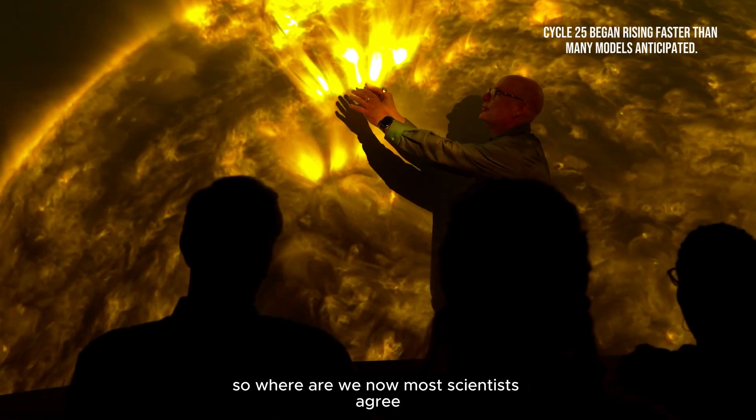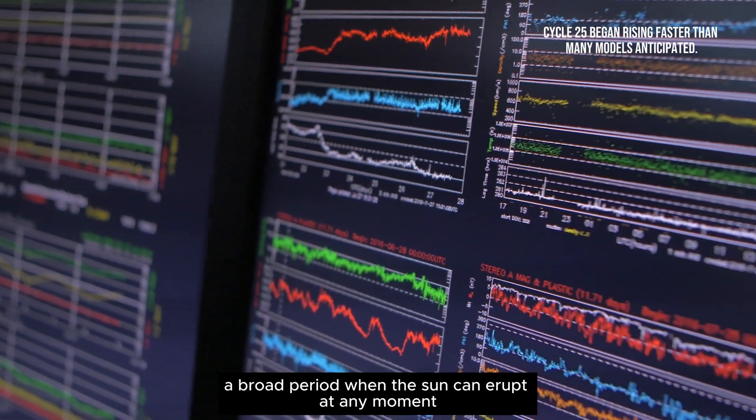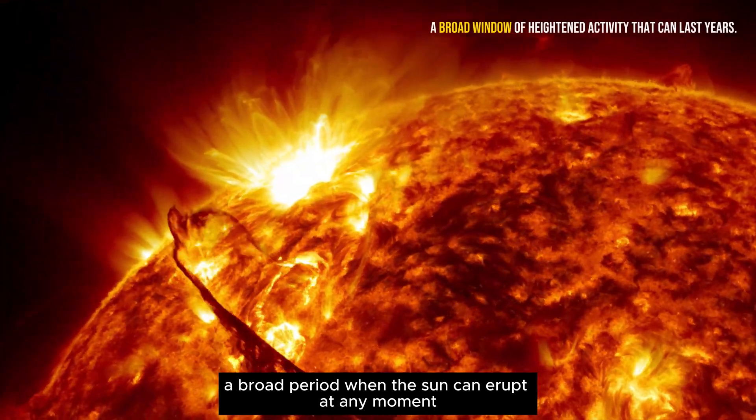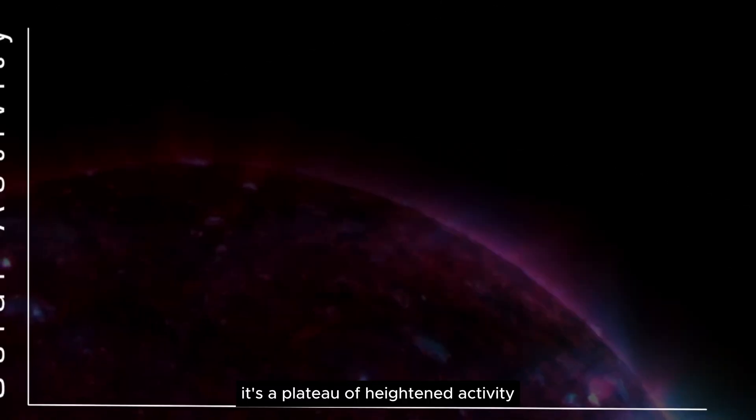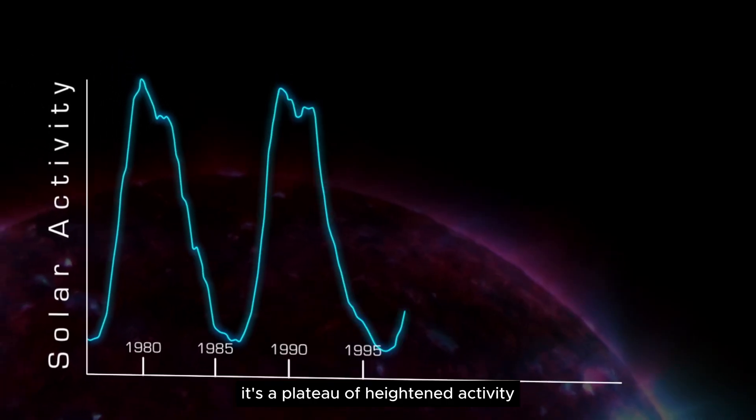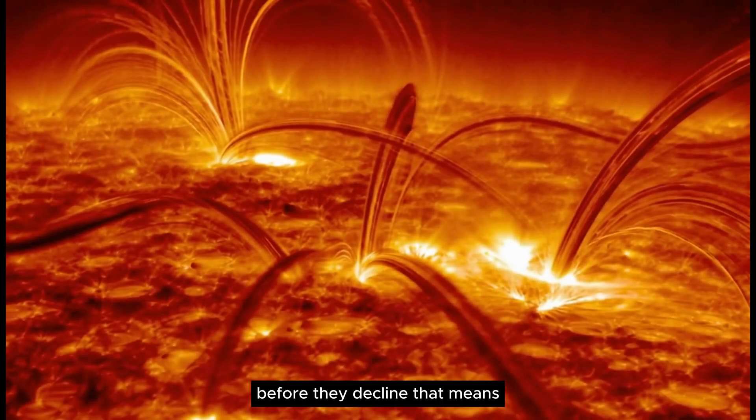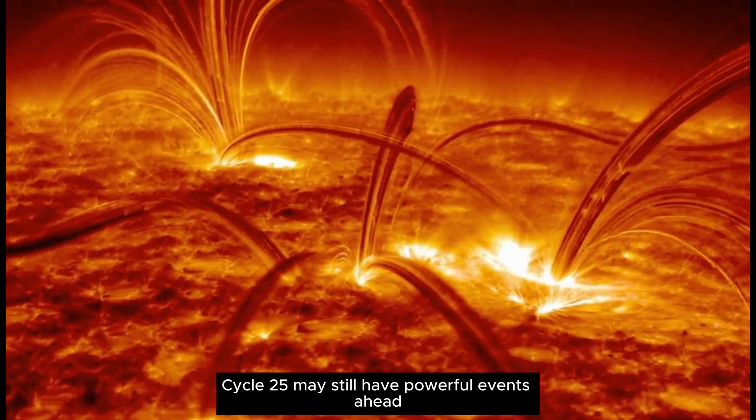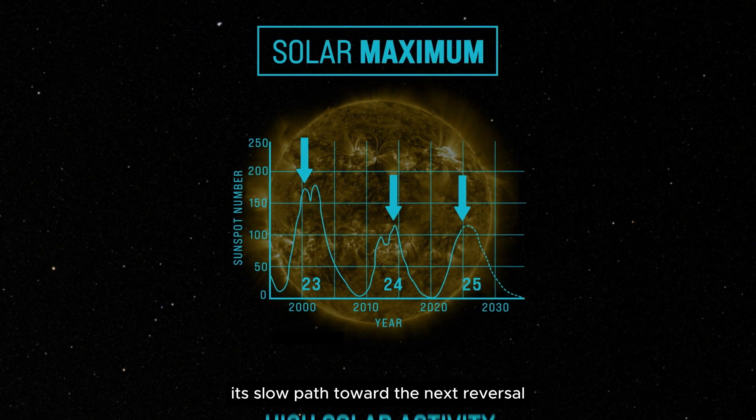So where are we now? Most scientists agree we're inside the solar maximum window, a broad period when the sun can erupt at any moment. But solar maximum isn't a single spike on a graph. It's a plateau of heightened activity, and cycles often deliver multiple peaks before they decline. That means cycle 25 may still have powerful events ahead, even as it begins its slow path toward the next reversal.